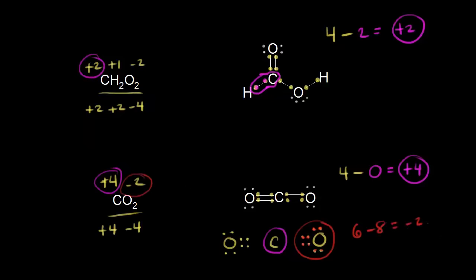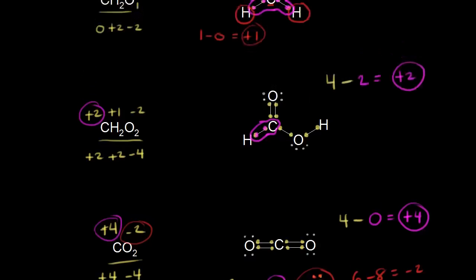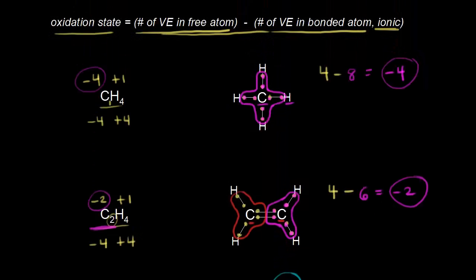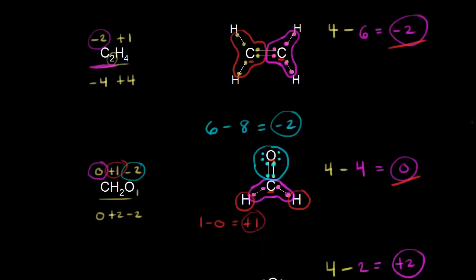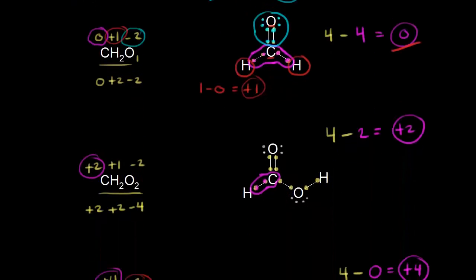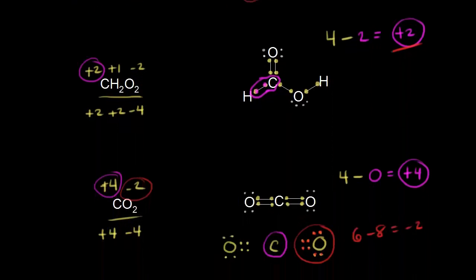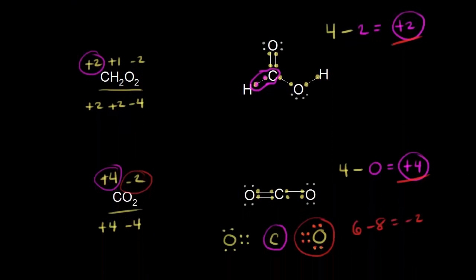Let's go back and look at all the different oxidation states we've covered for carbon. We started with minus four, then went to minus two, then zero, then plus two, and finally plus four. So carbon can have a range of oxidation states from minus four to plus four when it has four bonds. In between values are also possible — for example, carbon can have an oxidation state of plus three, though we didn't cover an example like that in this video.